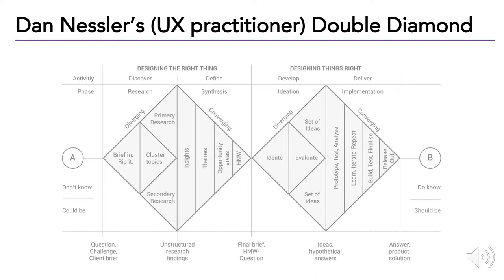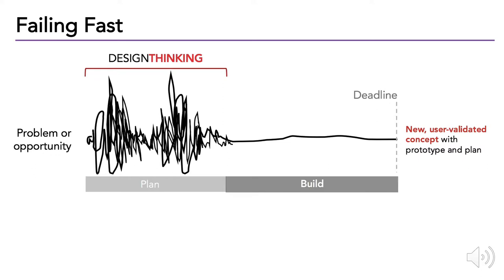Here's a UX practitioner's guide to the Double Diamond. You may see terms like 'HMW question,' which stands for 'How Might We.' What the Double Diamond approach and design thinking allow you to do is fail fast. Failure is actually a really good thing, so long as it's done the right way — and the right way is by failing fast. Notice these double-diamond peaks: you do a lot of work, come back to the middle, do more work, and come back again.